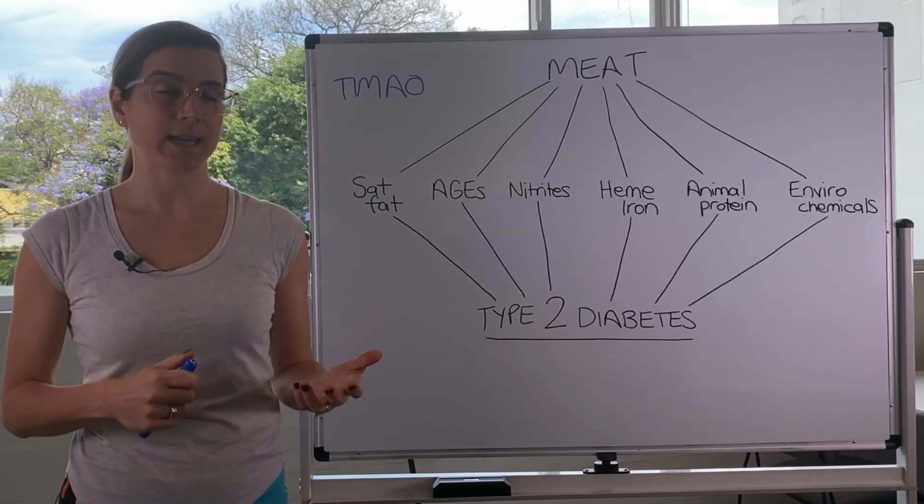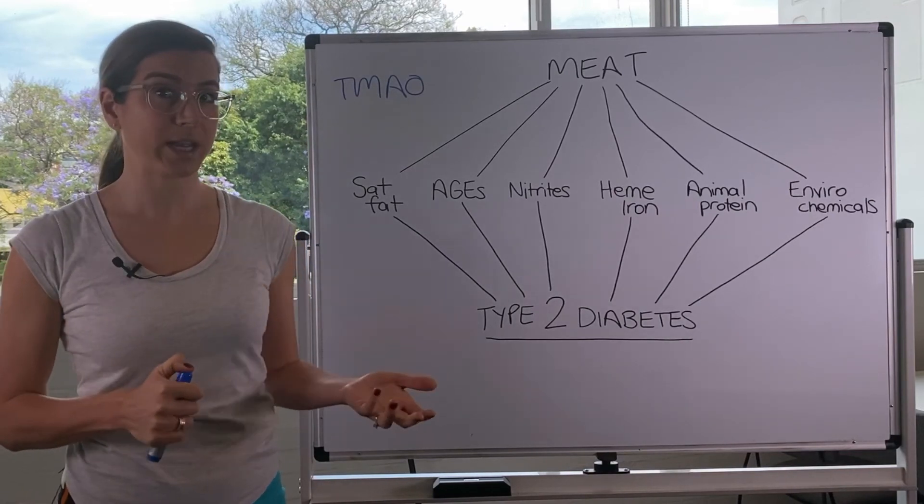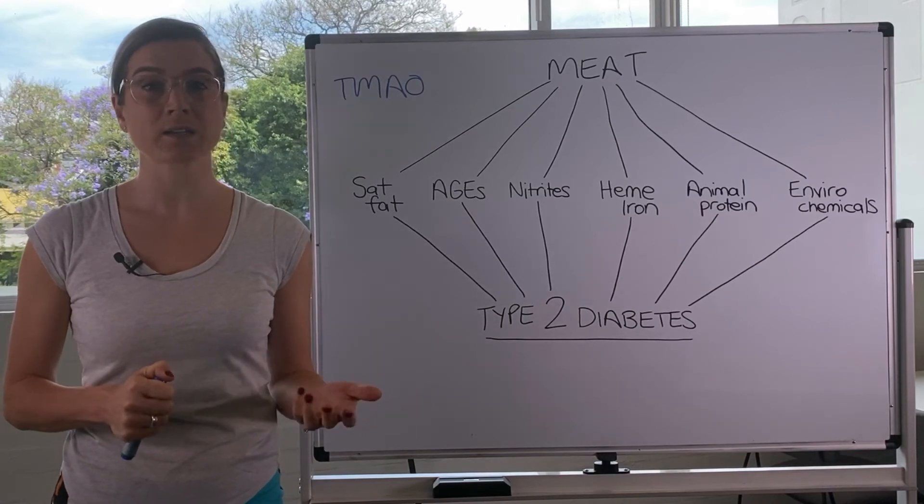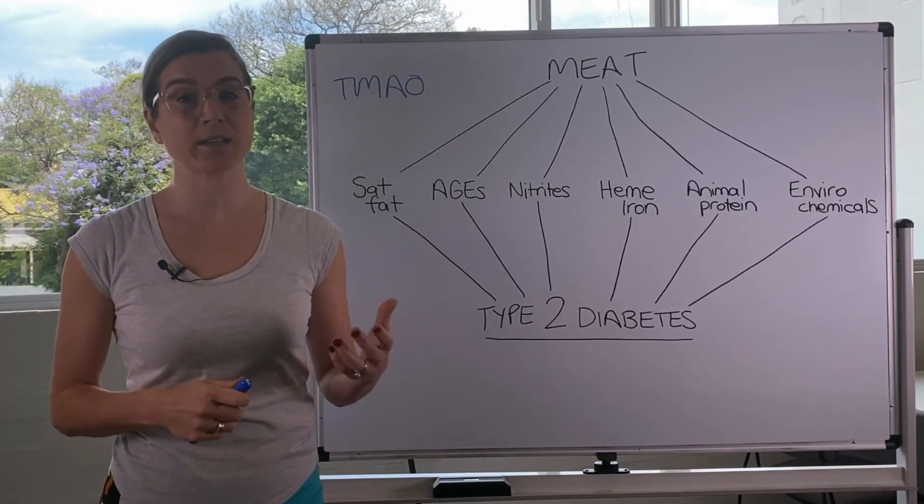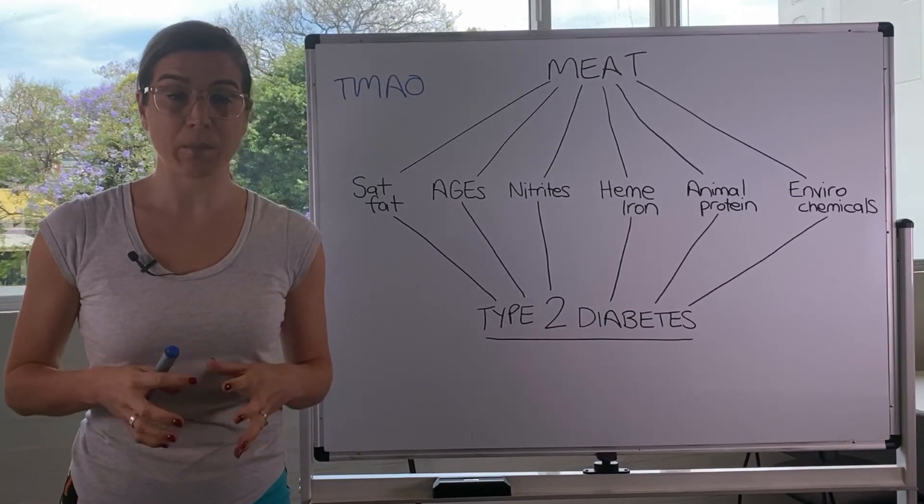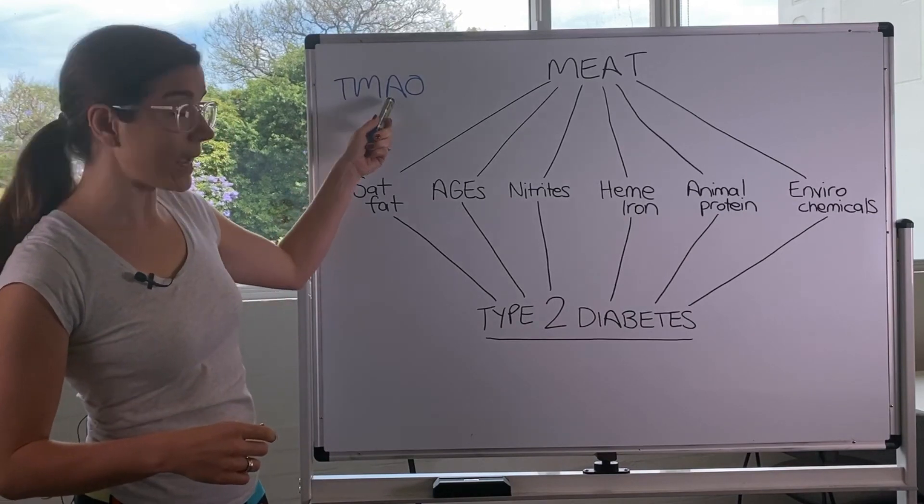So choline and L-carnitine are amino acids of animal proteins. So when you eat meat and other animal products, these amino acids, choline and L-carnitine, are digested by the bacteria or the microbes in your gut. And they produce TMAO.